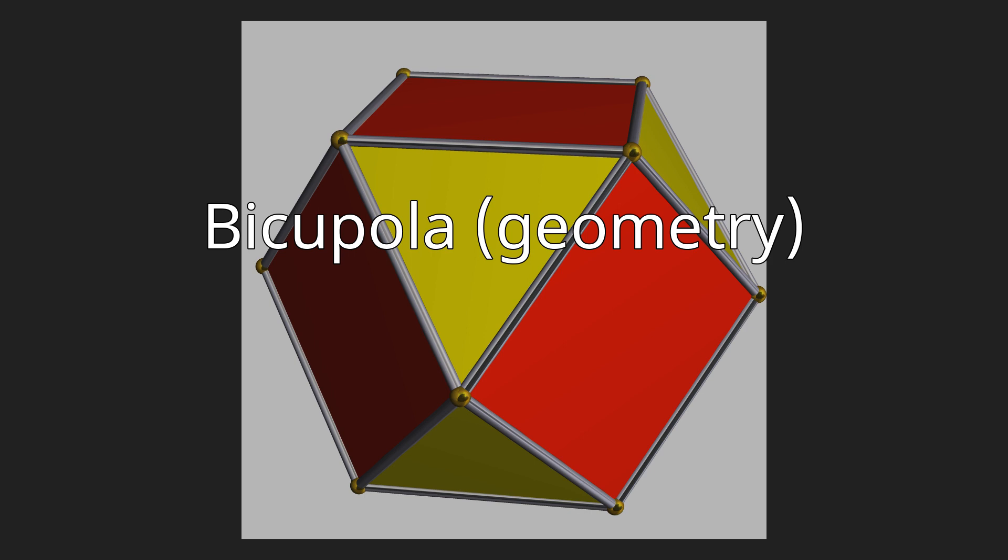Bicupola geometry. In geometry, a bicupola is a solid formed by connecting two cupolae on their bases.